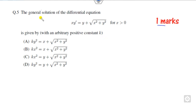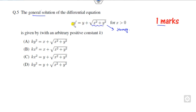Whenever there is a question related to the general solution, you first have to think about what representation this differential equation has. You can clearly see that this equation is homogeneous. Why? The degree of each term is 1, and all terms are present. So it is homogeneous.